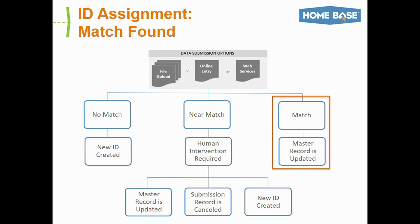The third path is when a match or exact match is found. If the same student is enrolled via PowerSchool and during matching the UID system identifies an exact matching student already in the system, the master record inside of UID is updated and the process is completed. This is an overview of the different data submission options and how the UID system assigns its ID.